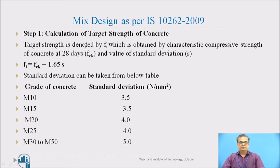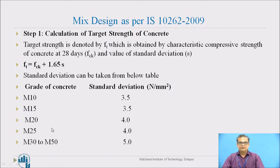The first step is calculation of target strength. Target strength FT is given by FT = FCK + 1.65S, where S stands for standard deviation. For different grades of concrete, the standard deviation values to be used are given in the code.